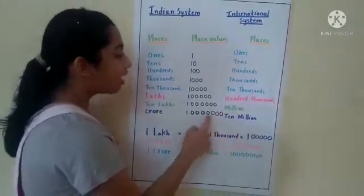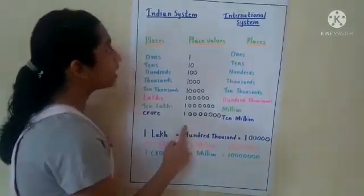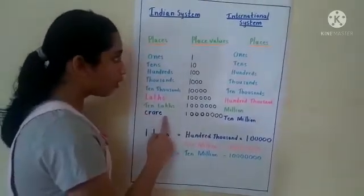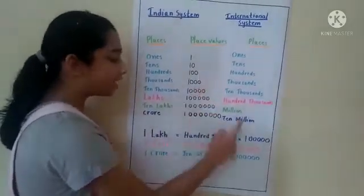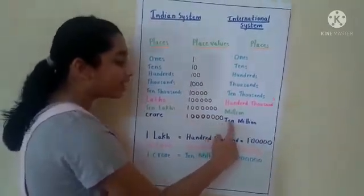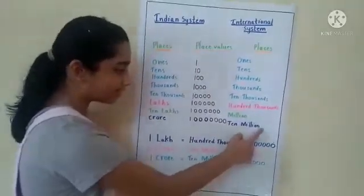Here are 7 zeros. In the Indian System, we call it Crores, and in the International System, we call it Ten Millions.